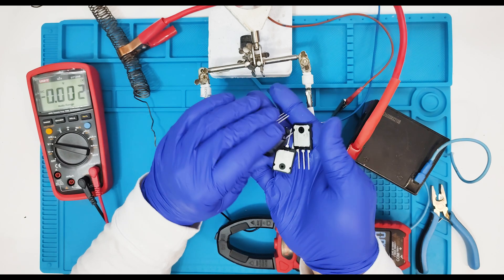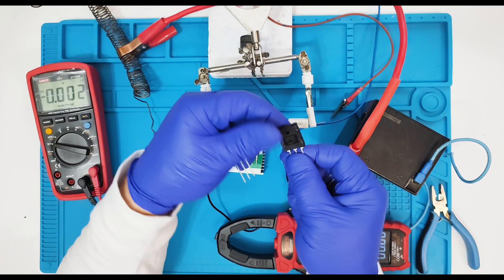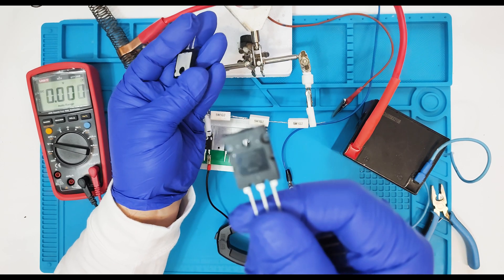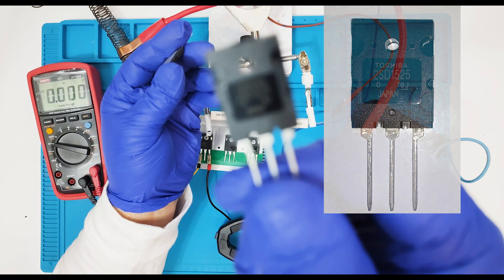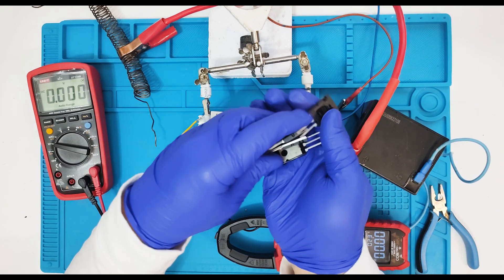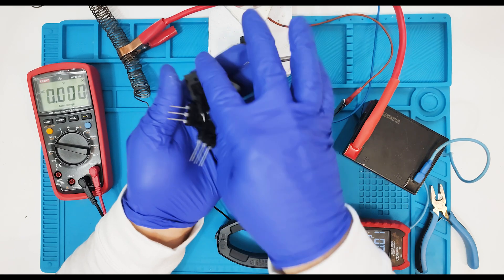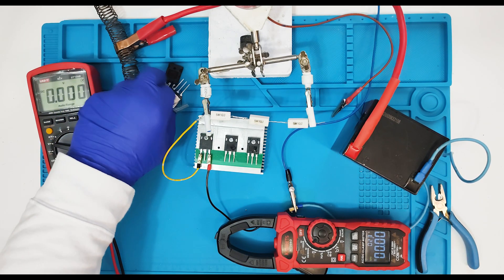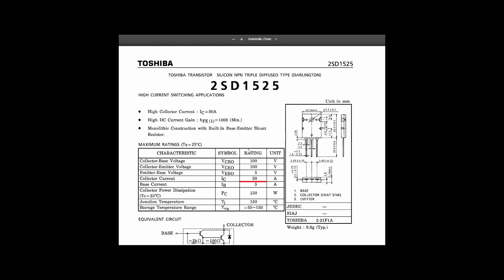And here we have some more transistors to test. The seller told us that this is a Darlington NPN type transistor. Toshiba 2SD1525 made in Japan. This transistor is more powerful. And we're going to try them now to be sure what we can get from the AliExpress.